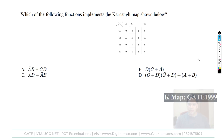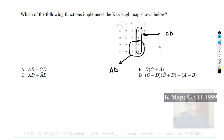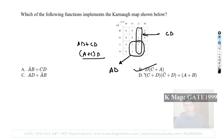Next question: which of the following functions implements the given K-map? Two sub-cubes are possible: one representing A·D and another representing C·D. The expression is AD plus CD, factoring out D gives (A plus C)·D. A very easy, straightforward question.